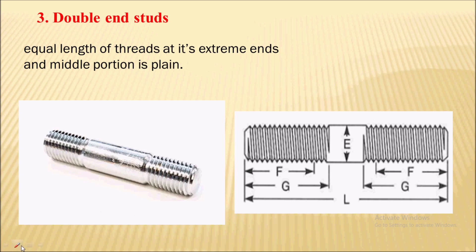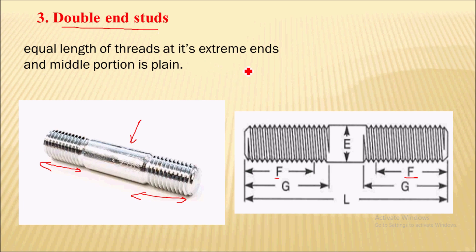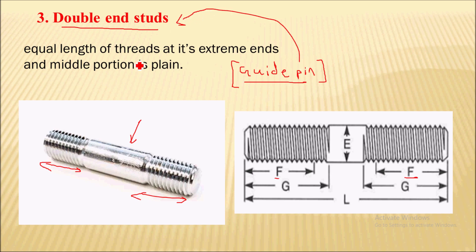The next type is the double end stud. Double end studs have an equal length of thread at each extreme end, and the middle portion remains plain. The application of the double end stud is the guide pin. Guide pins are used in dies to align them — the upper die and lower die can be aligned with the help of a guide pin, which is an example of a double end stud.